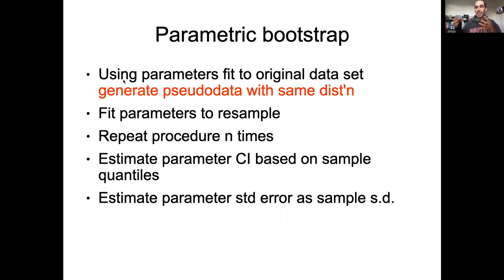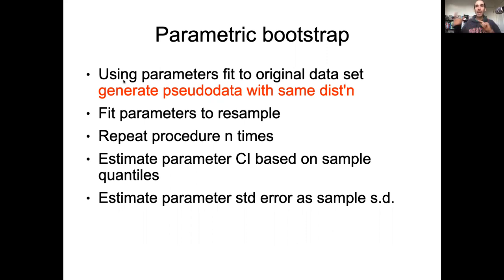So instead of generating it by resampling the data, what we're going to do is we're going to use the parameters from our best fit model — including, importantly, the estimate of the standard deviation, that residual error — and use that to generate pseudo-data with the same distribution as the original model. So I could take my x's and predict the mean using my best fit model.